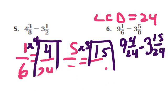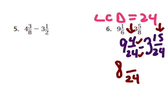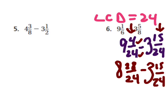The first fraction is four twenty-fourths and the second is fifteen twenty-fourths — I can't take fifteen from four. So I'm going to use the trick to borrow from my nine: subtract one from the nine, it becomes eight, the denominator stays the same, then add the numerator and the denominator — four plus twenty-four is twenty-eight. The second part of my problem stays the same. Now I have eight and twenty-eight twenty-fourths minus three and fifteen twenty-fourths.